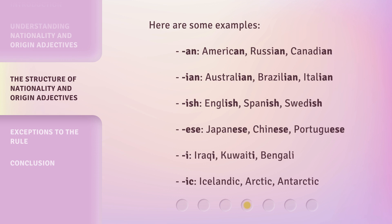For -ian: Australian, Brazilian, Italian. For -ish: English, Spanish, Swedish. For -ese: Japanese, Chinese, Portuguese. For -i: Iraqi, Kuwaiti, Bengali.